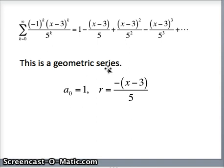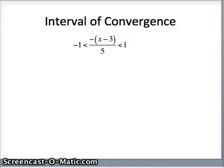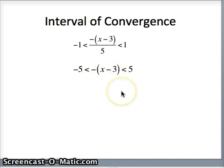A geometric series converges as long as the common ratio is between -1 and +1. So we need r = -(x-3)/5 to satisfy -1 < r < 1. Our next move is to multiply through by 5: multiplying by 5 gives -5 on the left and +5 on the right, so we get -5 < -(x-3) < 5.